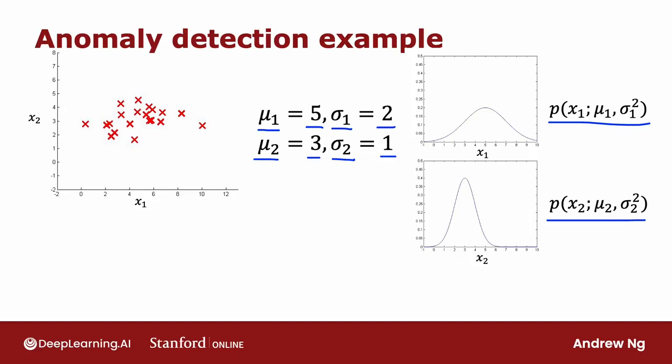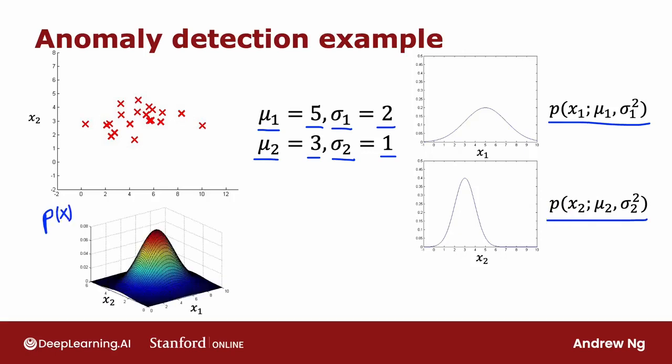If you were to actually multiply p(x₁) and p(x₂), then you end up with this 3D surface plot for p(x), where at any point, the height of this is the product of p(x₁) times p(x₂) for the corresponding values of x₁ and x₂. And this signifies that values where p(x) is higher are more likely. So values near the middle kind of here are more likely, whereas values far out here, like values out here, are much less likely at a much lower chance.